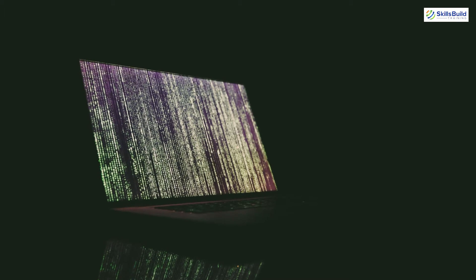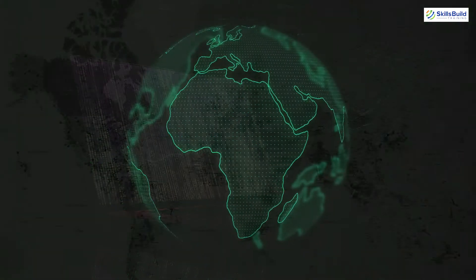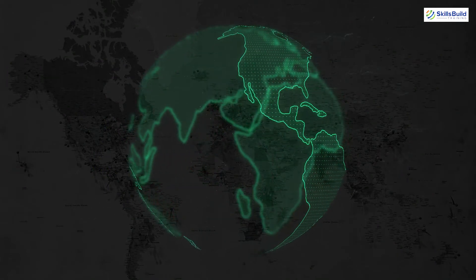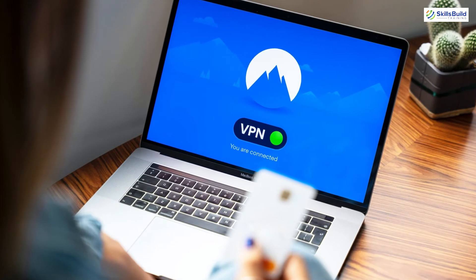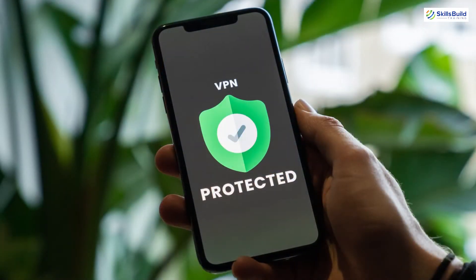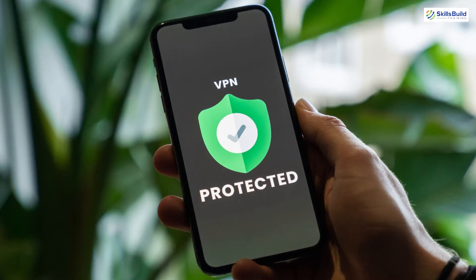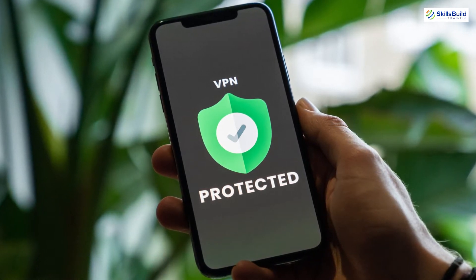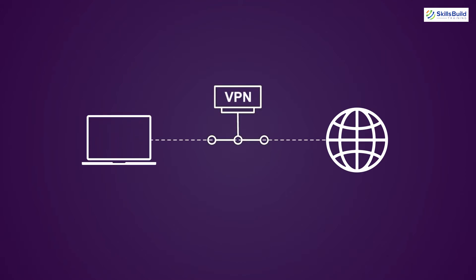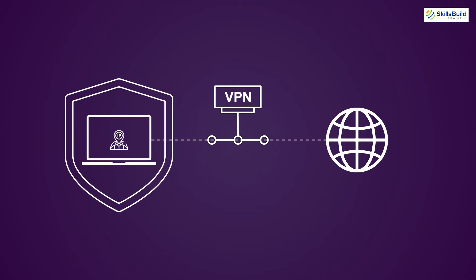There is a simple way we can protect our privacy online and get full access to content and data all over the world — we can do all that by using a VPN. A VPN gives anonymity and privacy online by creating a private network from a public connection. It makes a private network between the user and the server, letting the user communicate using that private connection.